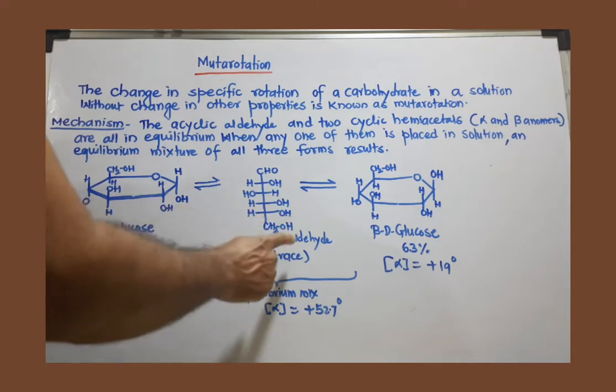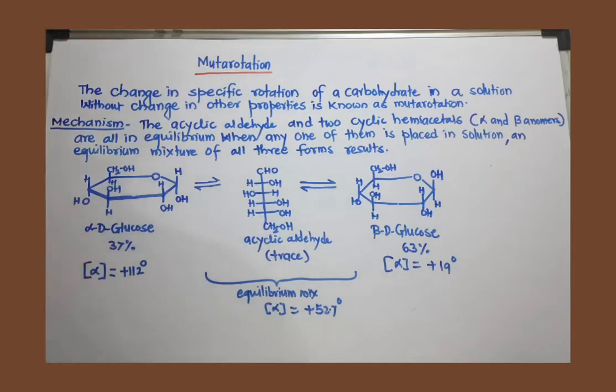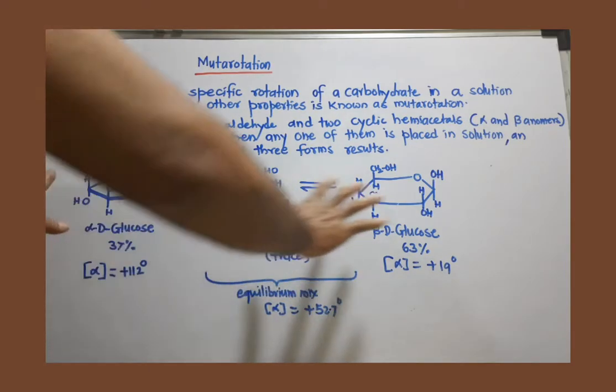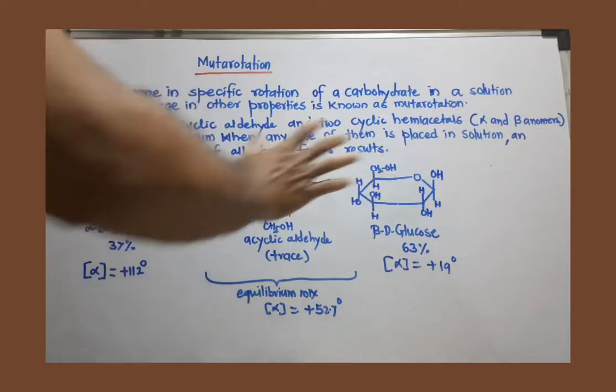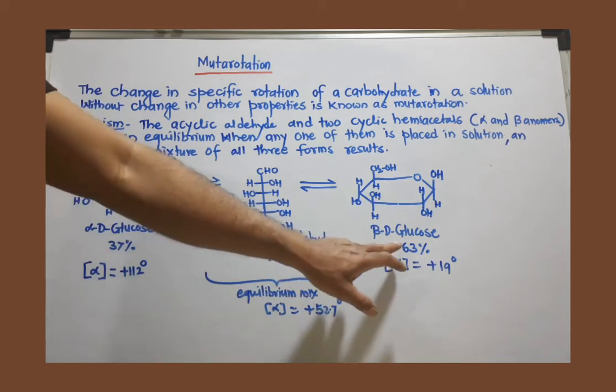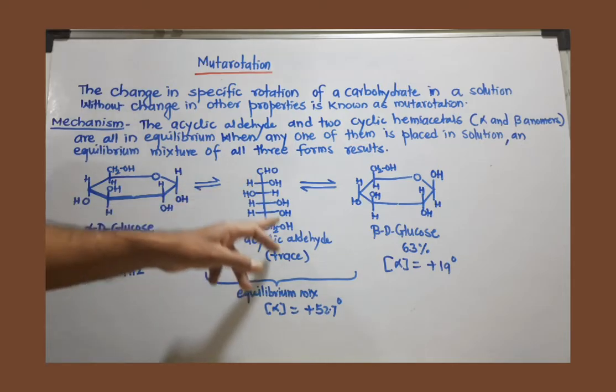I have even given the percentages. These three forms of glucose—open chain and cyclic forms—are in equilibrium, always in equilibrium in solution. That means in that solution, beta-D-glucose is 63 percent, alpha-D-glucose is 37 percent, and the acyclic aldehyde is in a very minute amount, a trace amount.